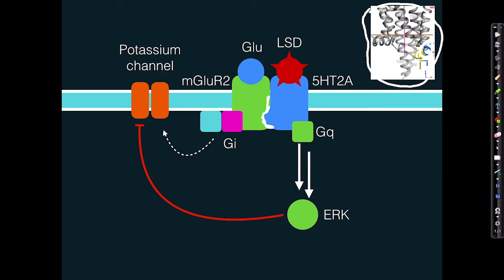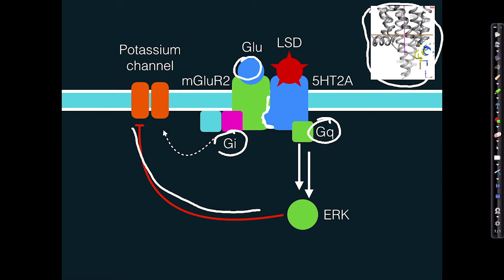So when glutamate normally activates the glutamate receptor, it activates what we call the GI pathway. And you know what that GI pathway does now — it activates the potassium channel. And LSD, when it binds the 5-HT2A receptor, activates the GQ pathway, which leads to phosphorylation and deactivation of the potassium channels.